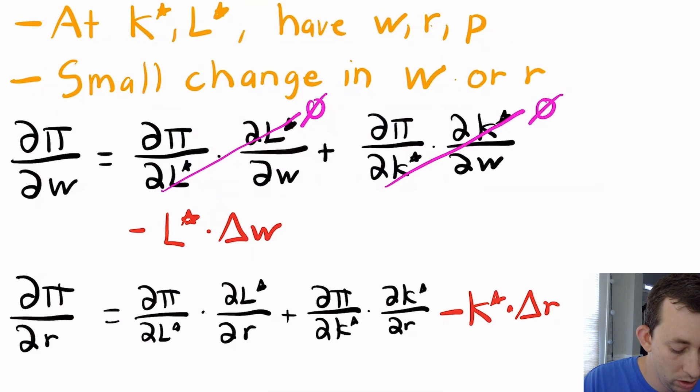The only change that's a direct effect is you'll lose profit because you have to pay everyone you've hired a little more. How many people have you hired? L*. That's how you get L* from this profit maximization problem using the envelope theorem.